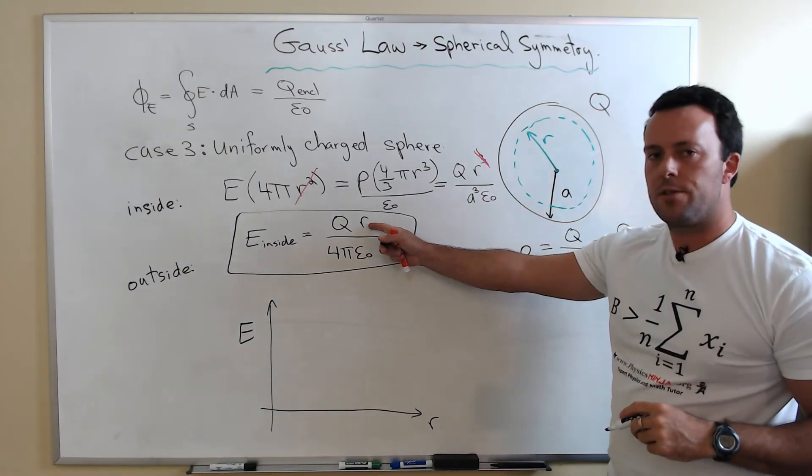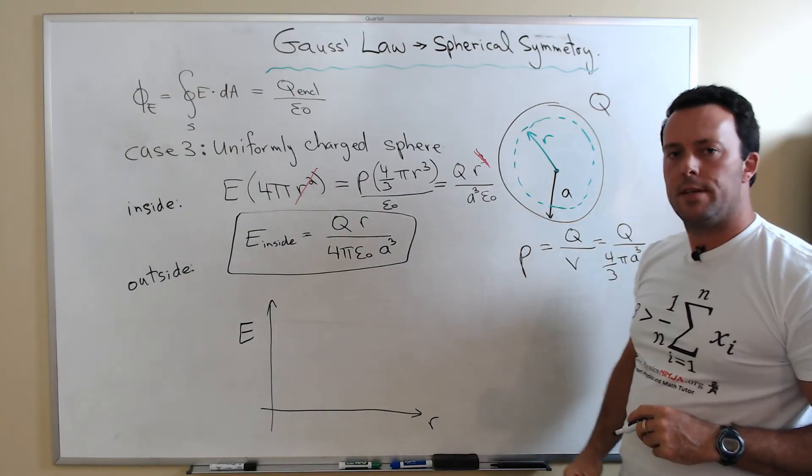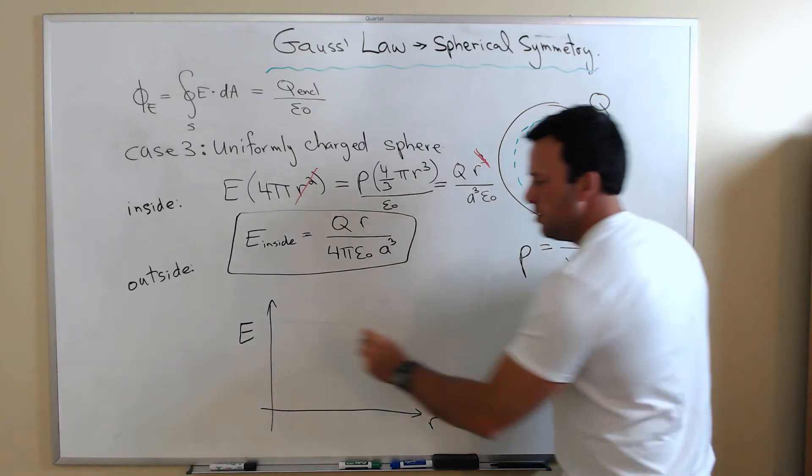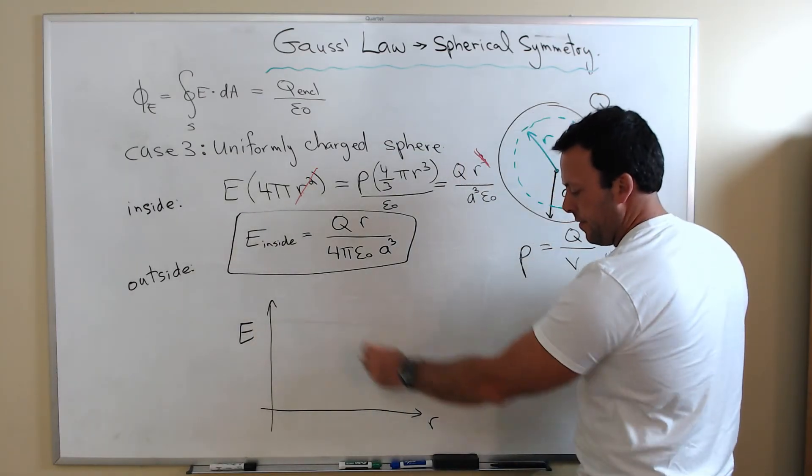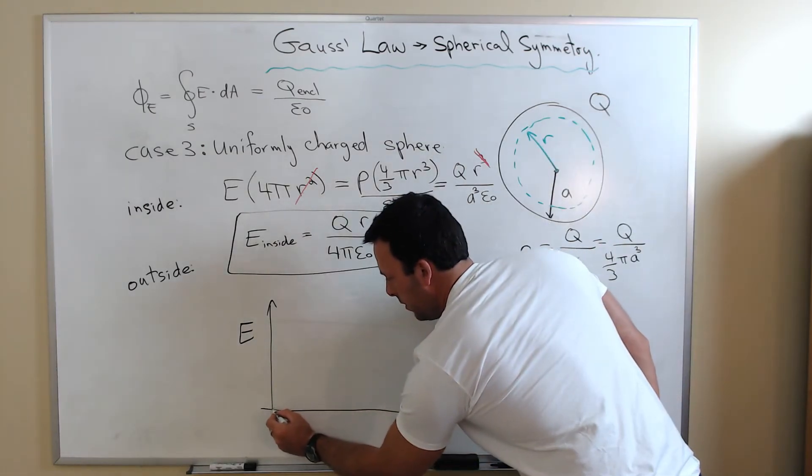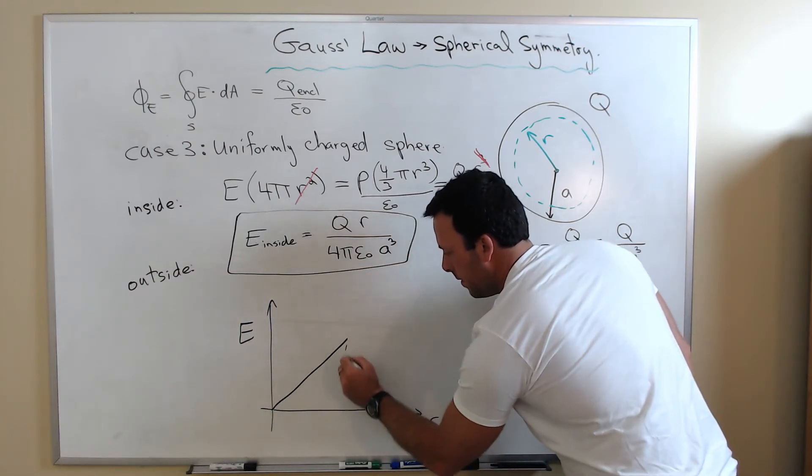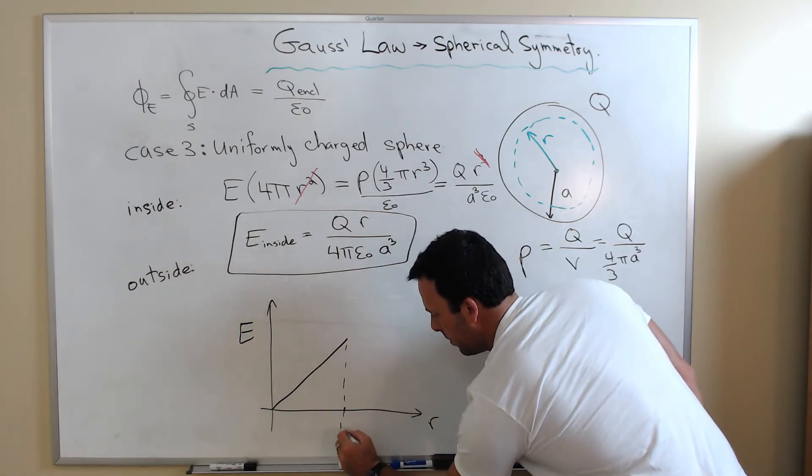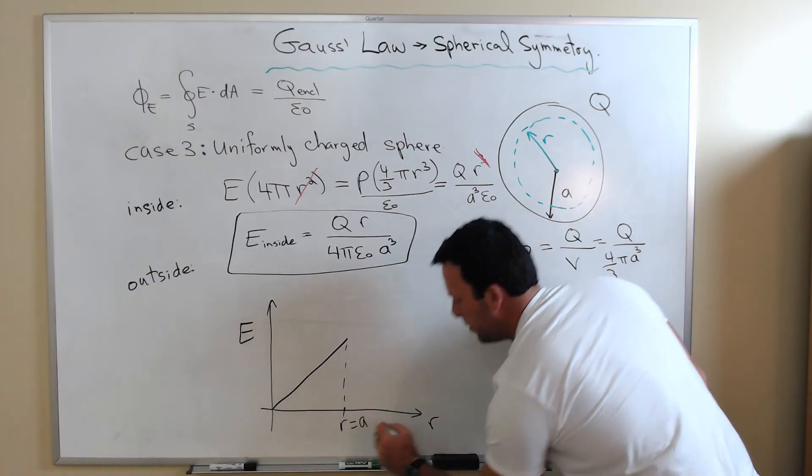That's an interesting result. It's linear with the distance from the center of the sphere. So if you go ahead and plot the electric field versus distance, you should get just a straight line up until you get to the radius of the sphere, which is A.